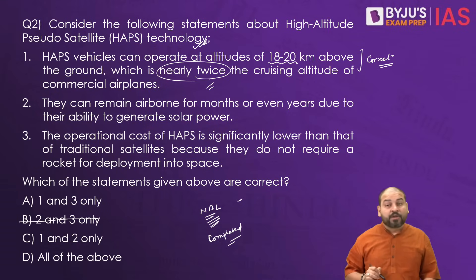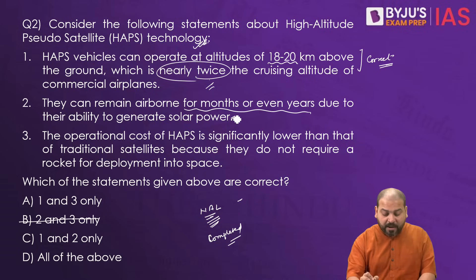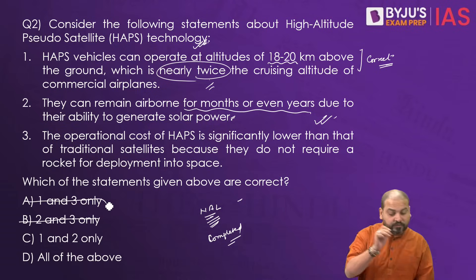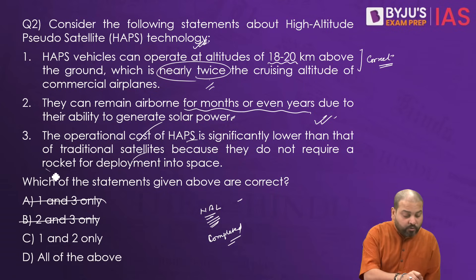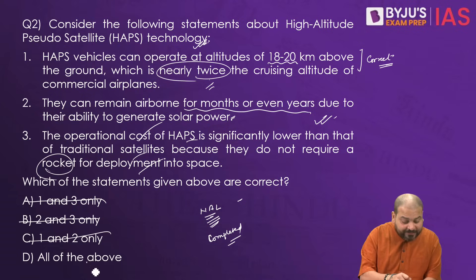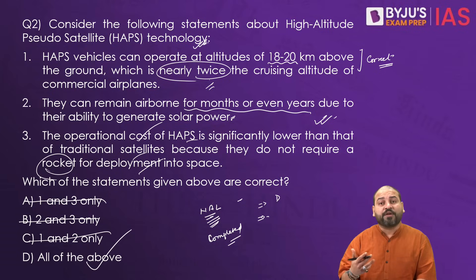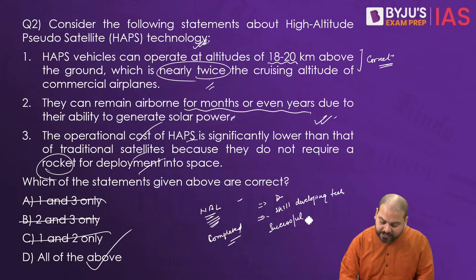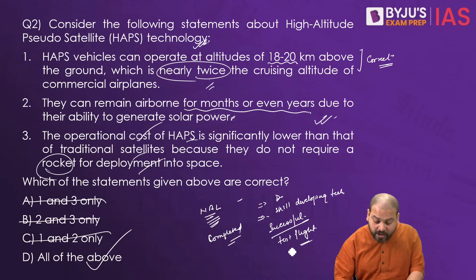So statement one is correct. The second statement — that they can remain airborne for months or even years due to their ability to generate solar power — appears to be a very far-fetched idea, but this is also a correct statement. And the third one — that the operational cost is lower than traditional satellites because they don't require a rocket for deployment into space — that's also correct. All three statements are correct. This is a very groundbreaking technology, and its successful test flight has put India in the group of very few countries that have this technology.